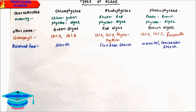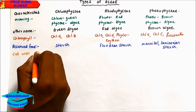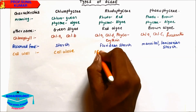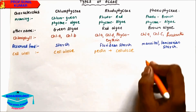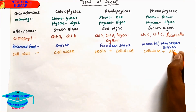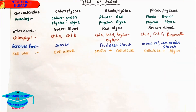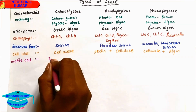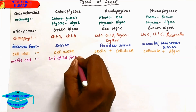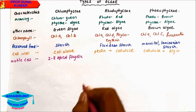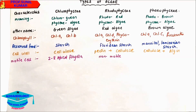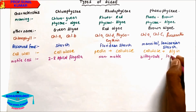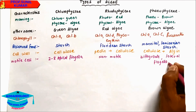Regarding cell walls: Chlorophyceae cell wall is made up of cellulose. In red algae it is made up of pectin and cellulose. In Phaeophyceae, the cell wall is made up of cellulose and algin. For motile cells: Chlorophyceae shows motility with 2 to 8 apical flagella. Rhodophyceae or red algae are non-motile. Brown algae are motile, showing biflagellate or lateral flagella.